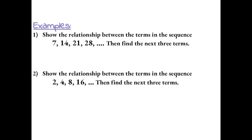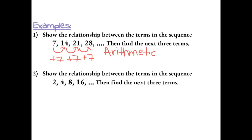Example: Show the relationship between the terms in the sequence 7, 14, 21, 28, and so on, then find the next three terms. To get from 7 to 14, 14 to 21, and 21 to 28, I notice that it is being increased by 7 each time. Because it involves adding, this is an arithmetic sequence that increases by plus 7.